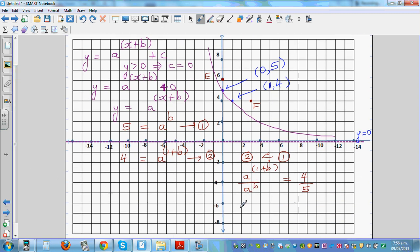Now using laws of indices, this is a raised to 1 plus b take away b, which is a raised to 1, or a equals 4 divided by 5, which is 8 divided by 10, or you can use your calculator. So this is 0.8, which implies your a is 0.8.